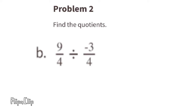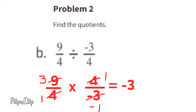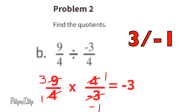We can change this to a multiplication problem by multiplying 9 fourths times the reciprocal of negative 3 fourths, giving us 9 fourths times 4 over negative 3. We simplify by cross-canceling: 4 goes into 4 once, 3 goes into 9 three times, and 3 goes into negative 3 negative 1 time. Multiplying across: 3 times 1 is 3 on top, and 1 times negative 1 is negative 1 on the bottom. So 3 over negative 1 equals negative 3.